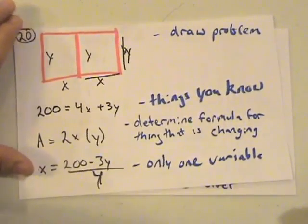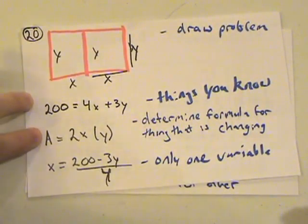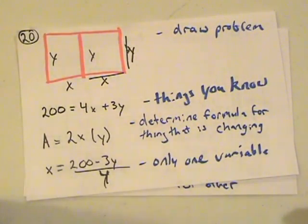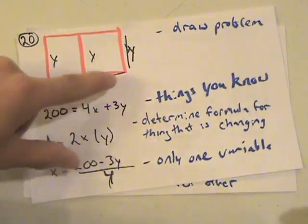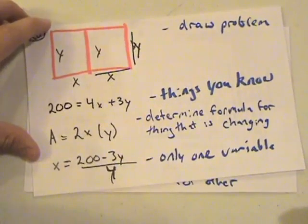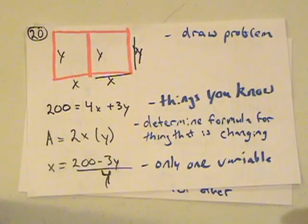Now we have to determine what we're going to, what's going to change, and that's the area that we're trying to maximize. We know the area of the square and we just applied it to this. So we have two x's that cover one side, 2x times y. So we have to determine the formula for the thing that is changing and that's the area.